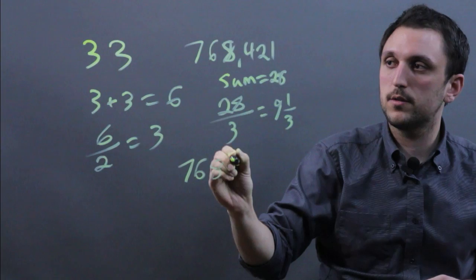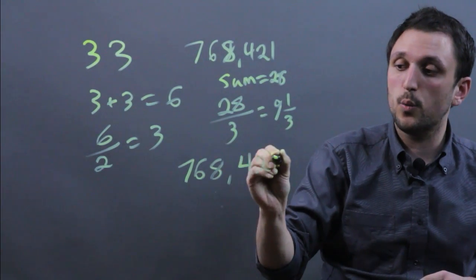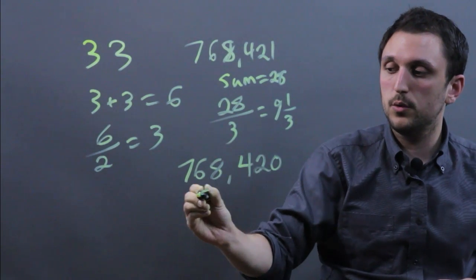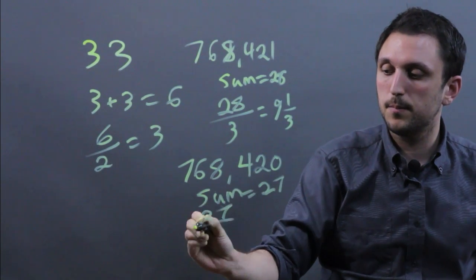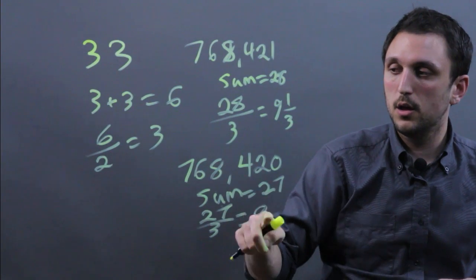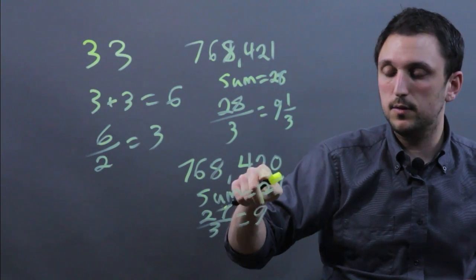But if we took the number 768,420, the sum would be 27, and 27 over 3 equals 9. So this number is divisible by 3.